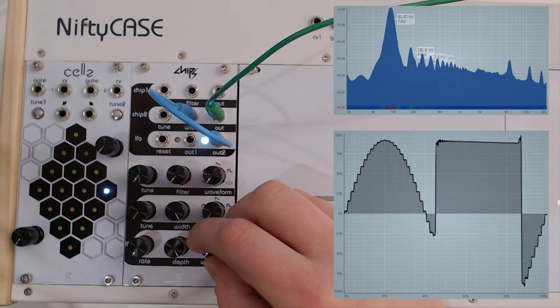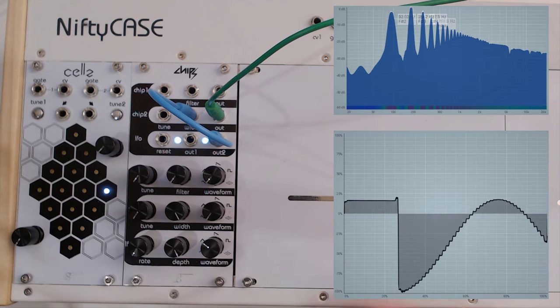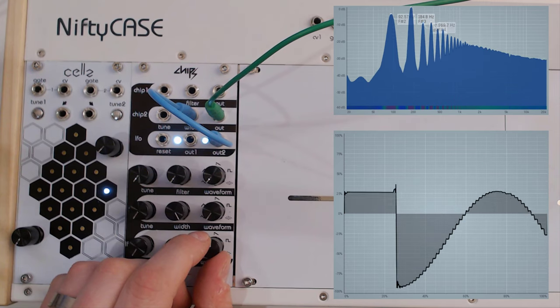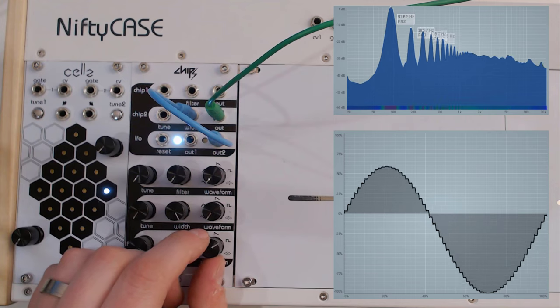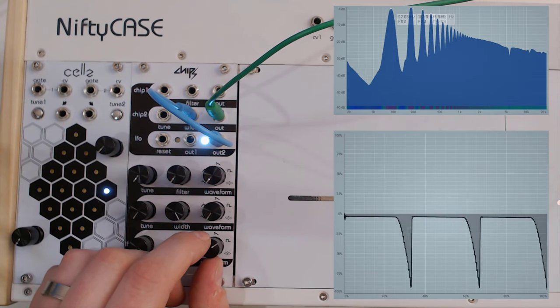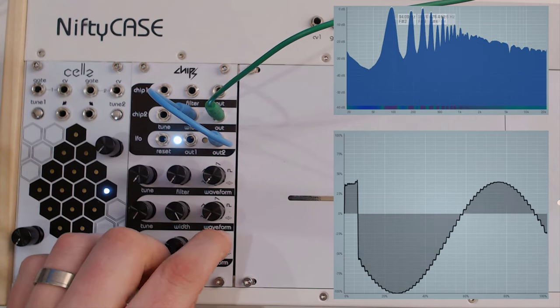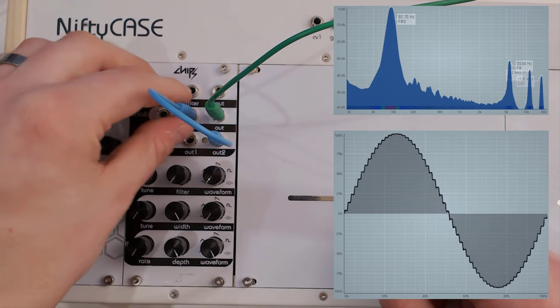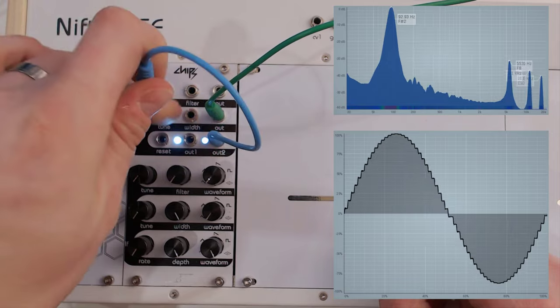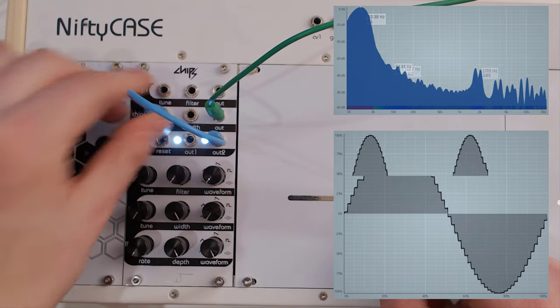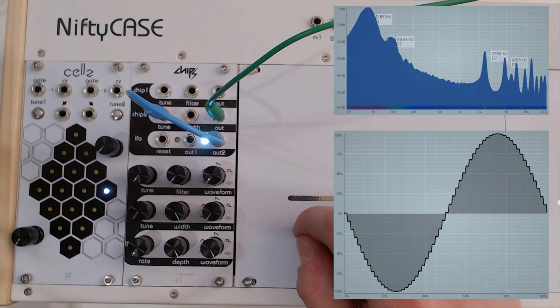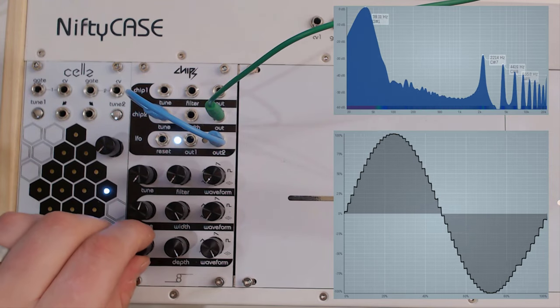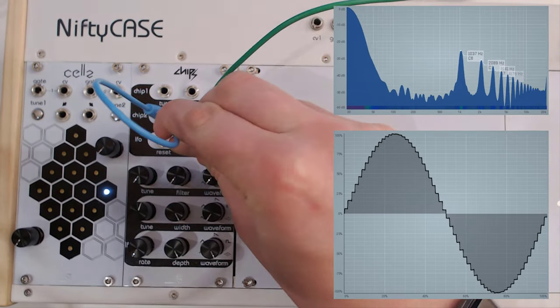This is the sine shape, triangle, sawtooth, pulse, and then you've got something really funny which is essentially noise. But I have the feeling this is quantized. Instead of putting this into the pulse width, let's put it into the tone.